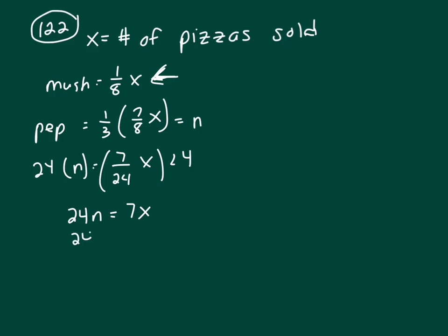So mushrooms equals 1/8 times X, and X is 24/7 N. And 8 will go into 24 three times, because when you multiply fractions, you can cancel a common factor. I'm left with 3/7 N, and that's answer B.